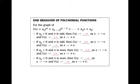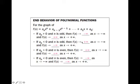We're going to talk about the end behavior of polynomial functions using a chart, then look at representative graphs. For a generic polynomial function: if the leading coefficient a_n is greater than zero (positive) and n is odd, then f(x) goes to negative infinity as x goes to negative infinity — it goes down to the left — and f(x) goes to positive infinity as x goes to positive infinity — up to the right. So it goes down to the left and up to the right.